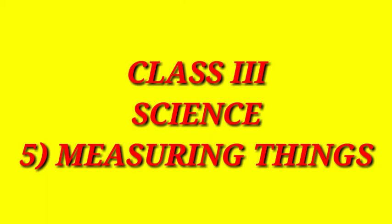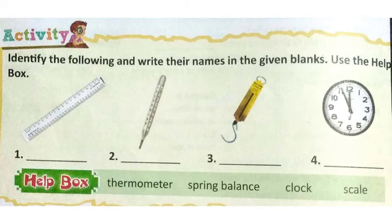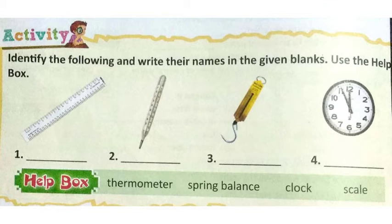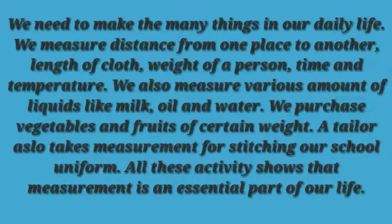Class 3, Subject: Science — Measuring Things. In this lesson, we have a first activity. Identify the following and write their names in the given blanks. Use the help box. First, identify it — it is a scale. Second, thermometer. Third, spring balance. Fourth, clock. In this way, you have to complete your activity.